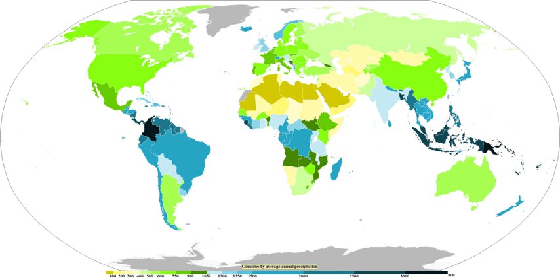The standard way of measuring rainfall or snowfall is the standard rain gauge, which can be found in 100 mm plastic and 200 mm metal varieties. The inner cylinder is filled by 25 mm of rain, with overflow flowing into the outer cylinder. Plastic gauges have markings on the inner cylinder down to 0.25 mm resolution, while metal gauges require use of a stick designed with the appropriate 0.25 mm markings.